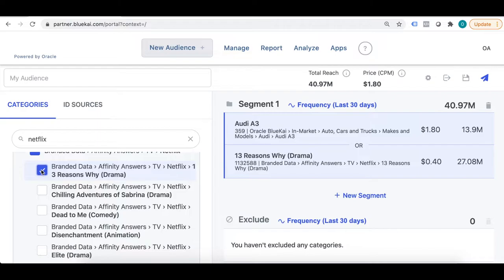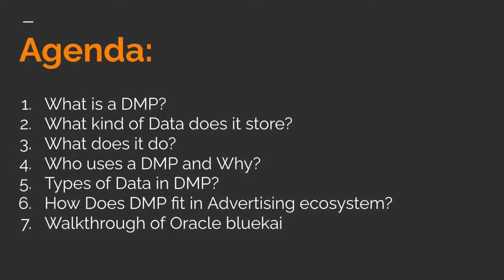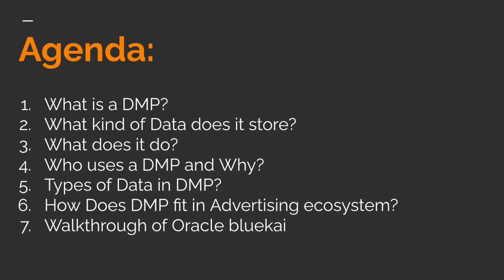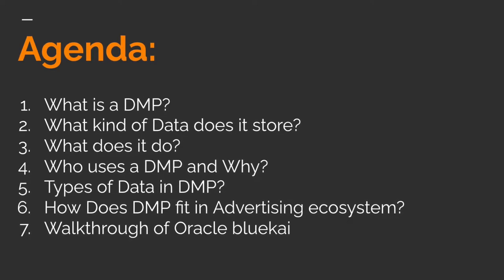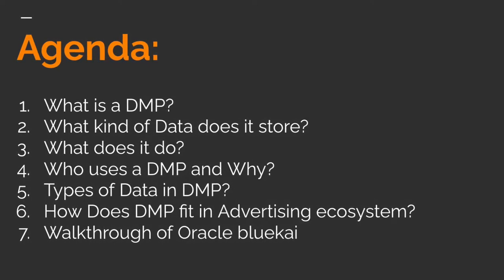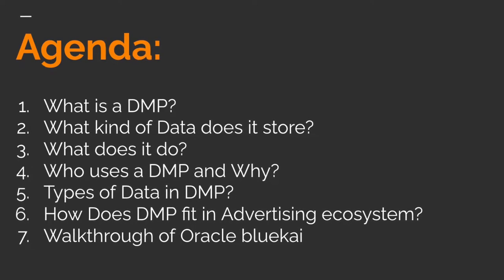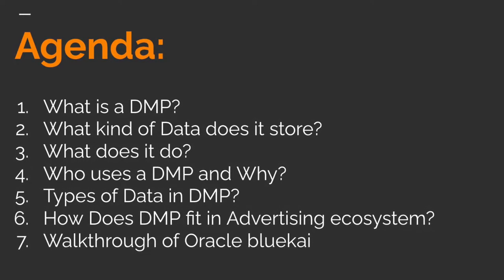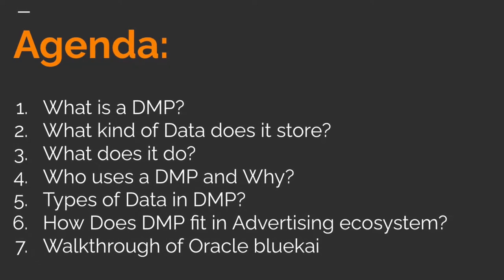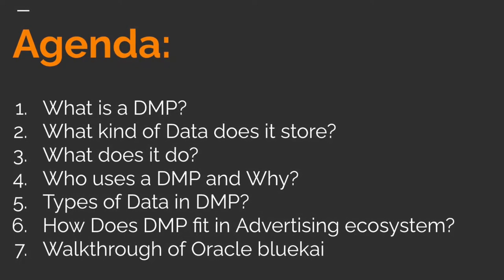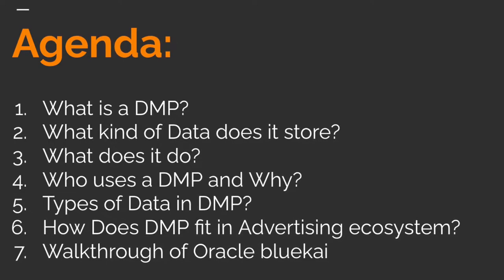Now we will come back and see all the data available here and what all we can do with DMP, but before that, this is an introduction video. I'll quickly give you an idea about what a DMP is, what kind of data does it store, what does it do, who uses a DMP and why, types of DMP, types of data in DMP, and how DMP fits in an advertising ecosystem. Then we will go through the Oracle BlueKai UI and I will show you how to do different kinds of audience collection, data segmentation, processing and activation.